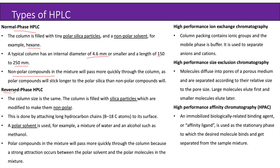The second type is reversed phase HPLC, where the column size is the same as that of normal phase HPLC, but the column is now filled with silica particles which are modified to make them non-polar. This is done by attaching long hydrocarbon chains of usually 8 to 18 carbon atoms to its surface. A polar solvent is used, for example a mixture of water and an alcohol such as methanol. Polar compounds in the mixture will pass more quickly through the column because a strong attraction occurs between the polar solvent and the polar molecules in the mixture.